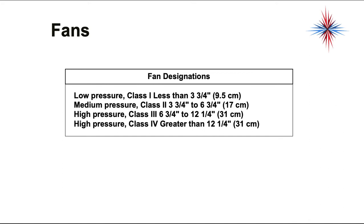Low pressure is less than three and three quarter inches. Medium pressure, class two, would be three and three quarter to six and three quarter inches. High pressure, class three, would be six and three quarter to twelve and one quarter inches. High pressure, class four, is greater than twelve and a quarter inches. By the way, that's water column, that's the pressures.